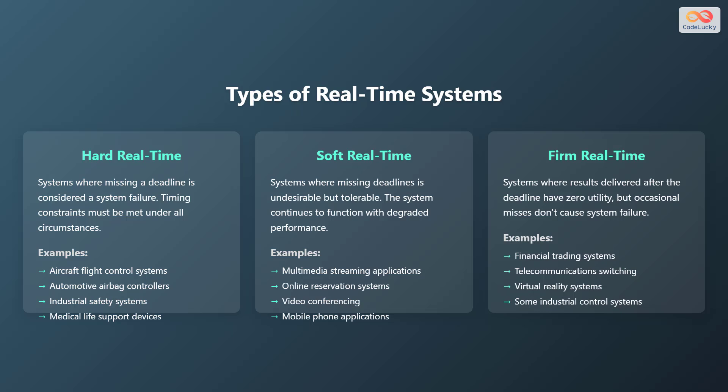Real-time systems can be categorized into three main types based on their timing constraints. First, we have hard real-time systems. In these systems, missing a deadline is considered a complete system failure — timing constraints must be met under all circumstances. Examples include aircraft flight control systems, automotive airbag controllers, industrial safety systems, and medical life support devices.